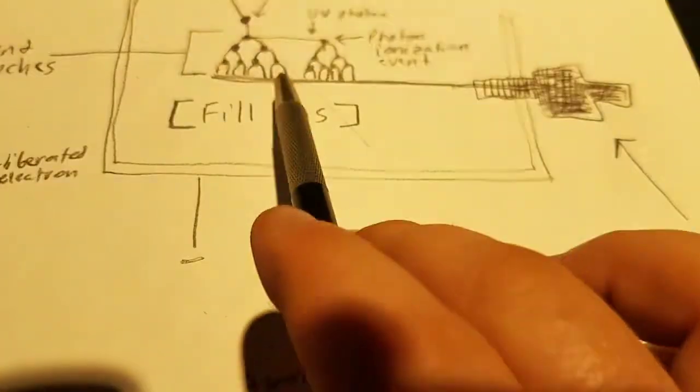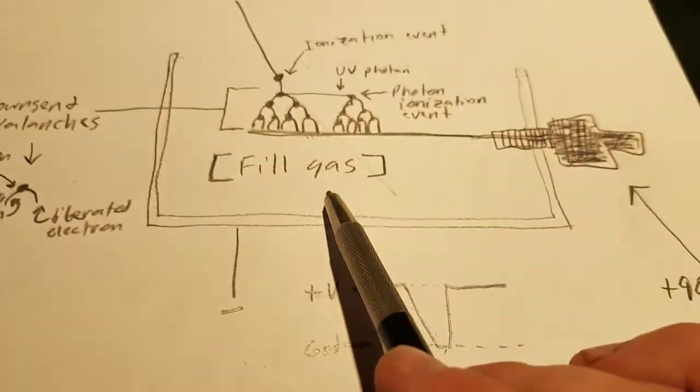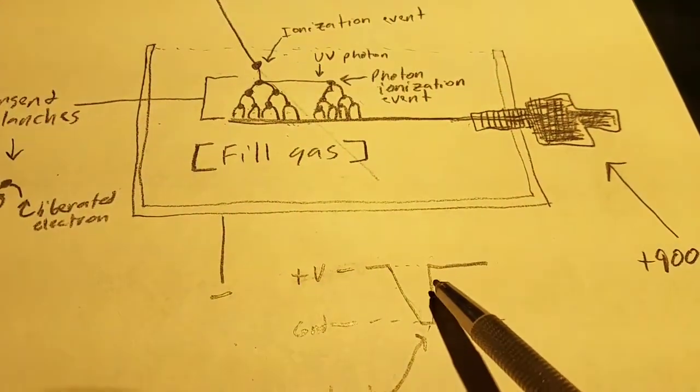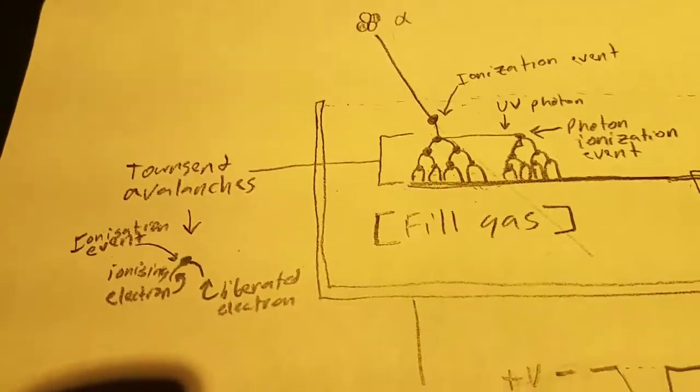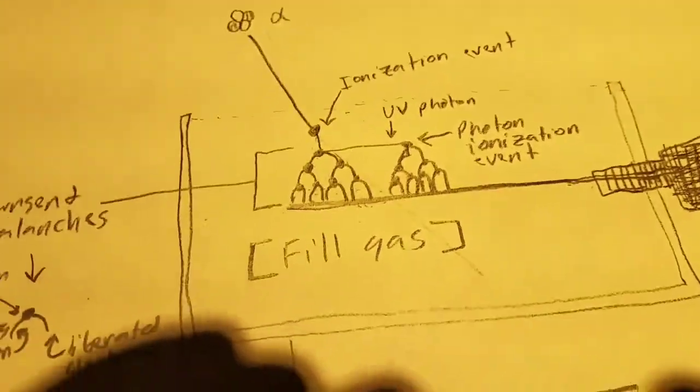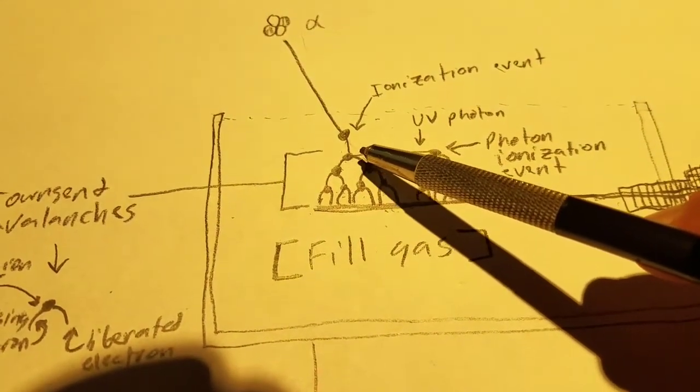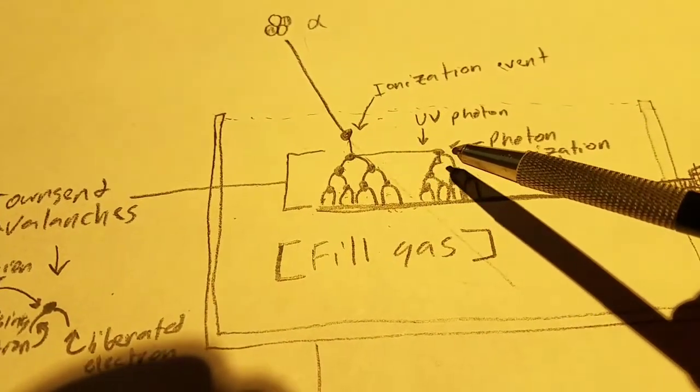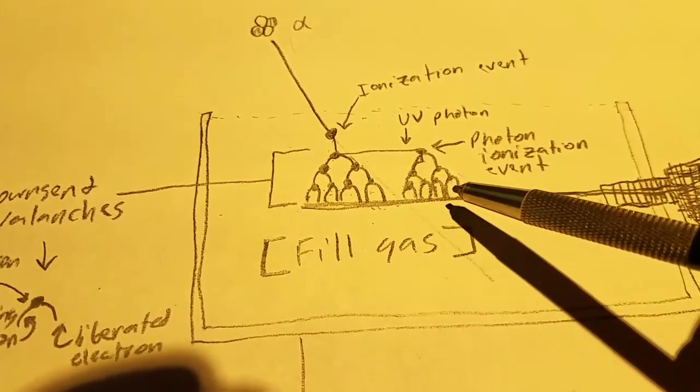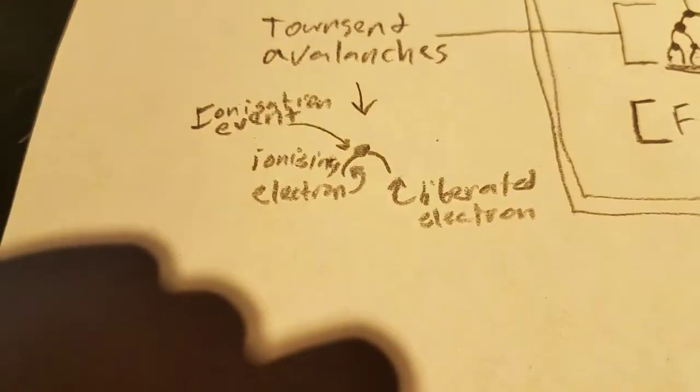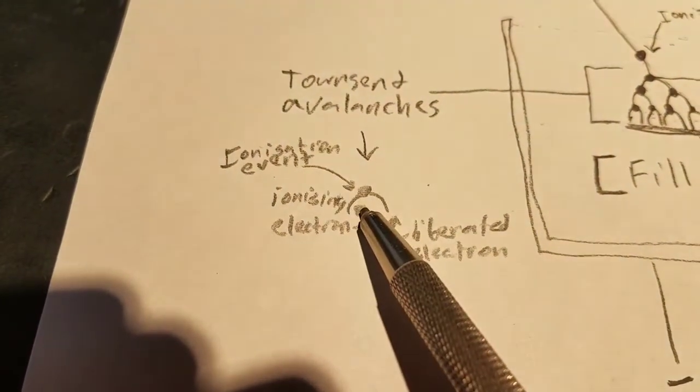The fill gas, which most tubes use halogen, actually causes the circuit to close eventually. Another side effect that makes the avalanches more pronounced is sometimes at the ionization events it'll create an ultraviolet photon, which are also energetic enough to cause additional avalanche events.